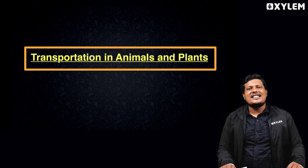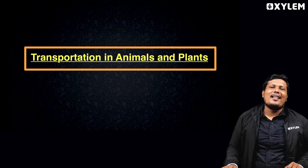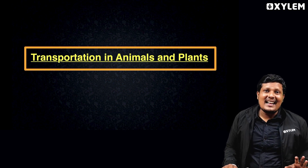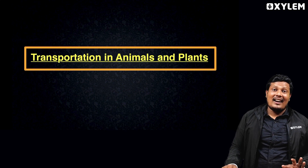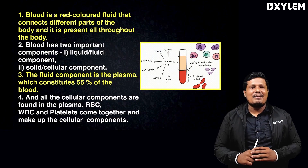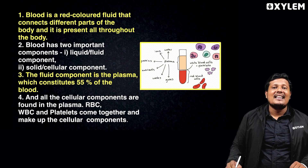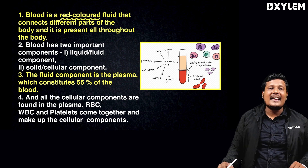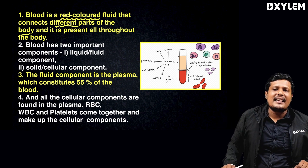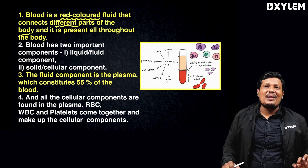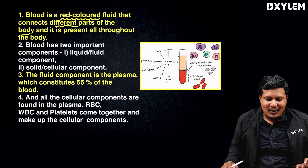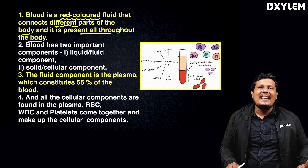When we discuss transportation, we will know something new. We will know how our body fluid works. Blood is fluid. We have to talk about body fluid. We are going to take a look at the blood — its color and properties. Blood is a red color fluid which connects different parts of the body.